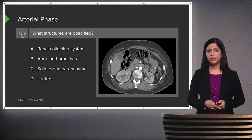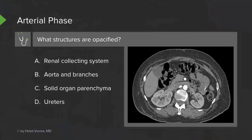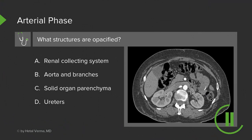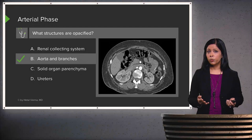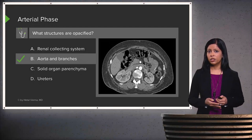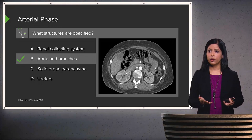Let's take a look at this. This is the arterial phase. What structures do you see opacified in the arterial phase? We see the aorta and its branches best opacified. You do have some opacification of other structures as well, but the best visualized are the aorta and its branches.